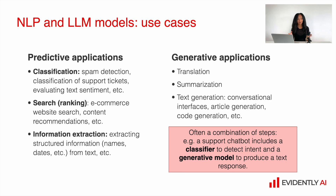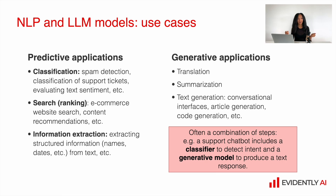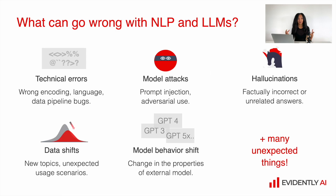However, together with predictive applications, nowadays we have quite a lot of generative applications as well, which include translation or summarization – where we create a short summary out of a huge article – text generation, conversational interfaces like chatbots, article generation, and even code generation. So we really have a lot of production systems and we need to know what can possibly go wrong with such systems in order to prepare to monitor them.